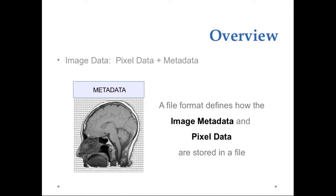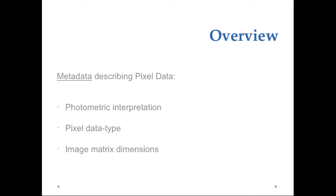Image data comes of pixel data plus metadata. This means that a file format specification contains recommendations on both how to store image metadata and how to store pixel data. Metadata are data that describe the image. In particular, some metadata are always present in every file format regarding the photometric interpretation of the image, the pixel data type, and the image matrix dimensions.